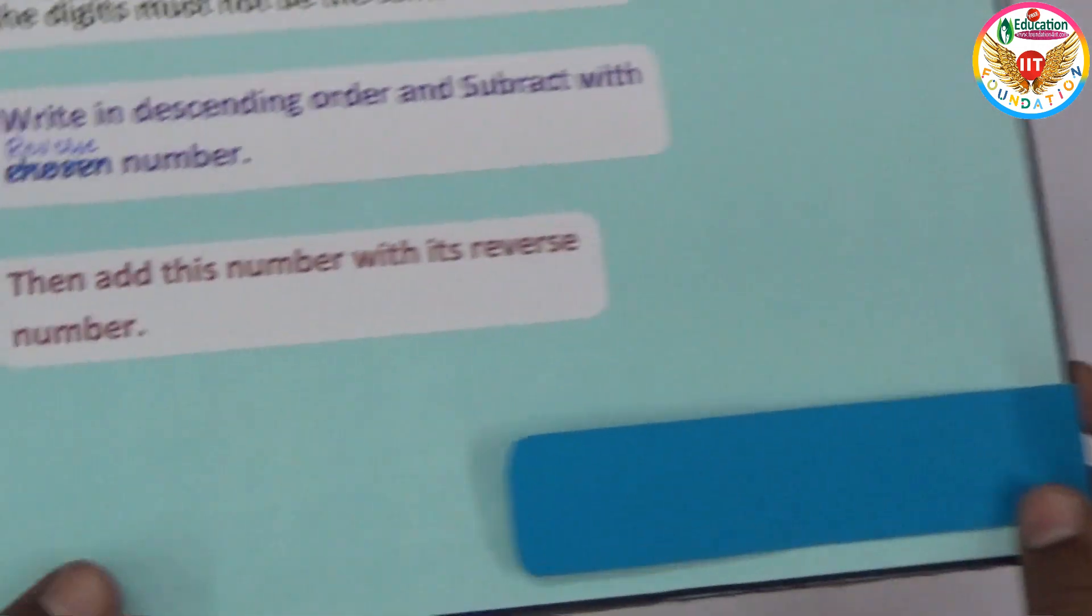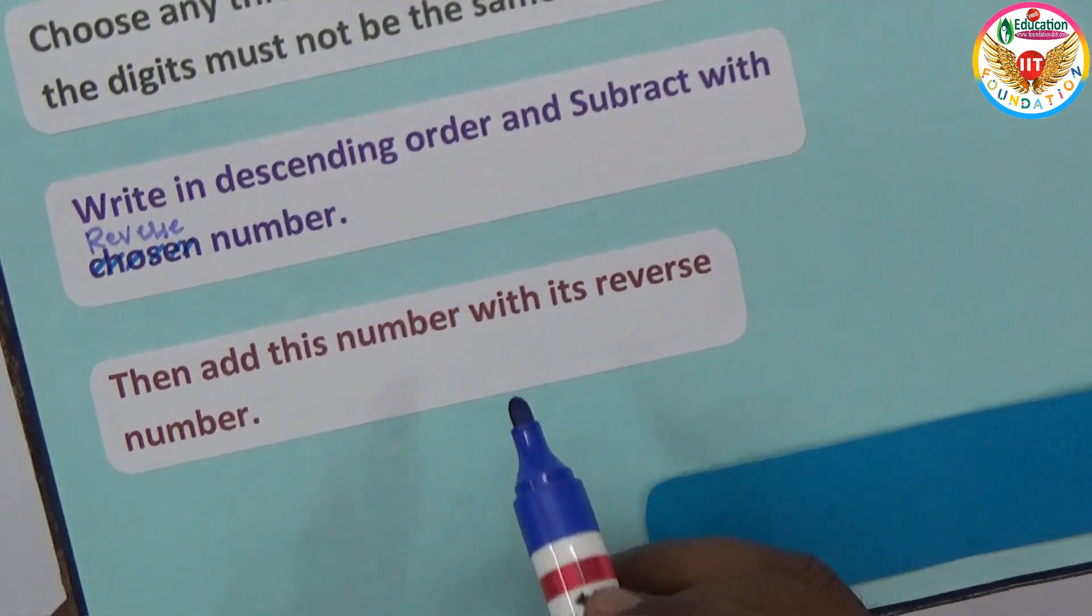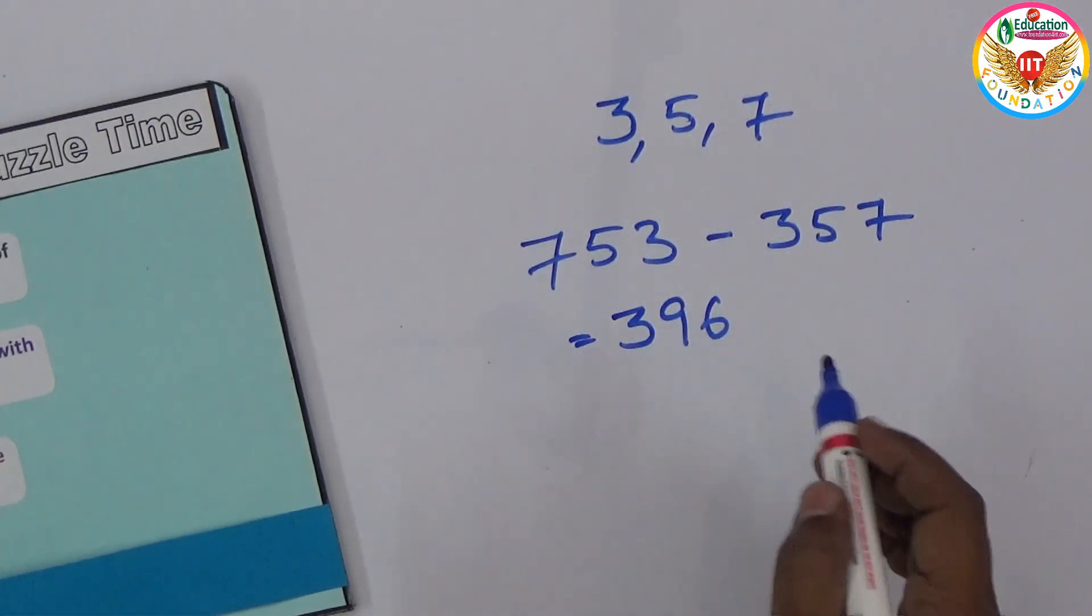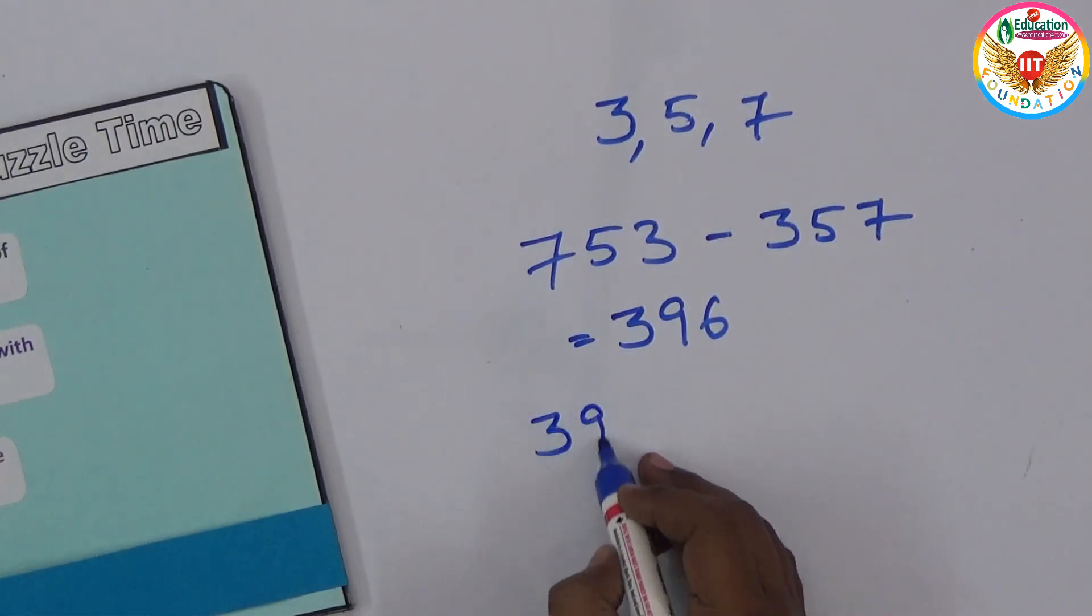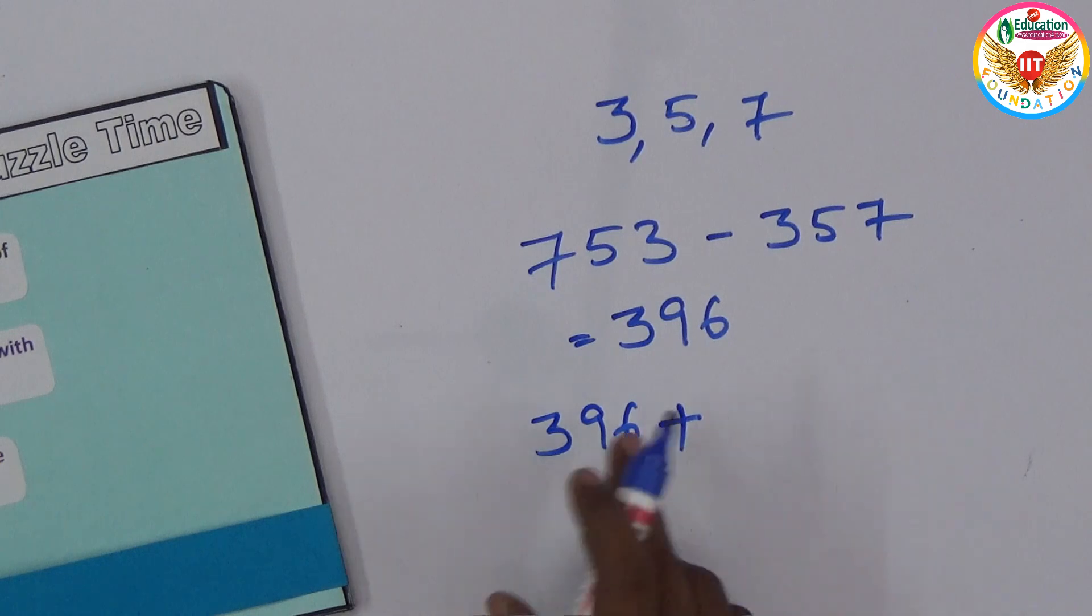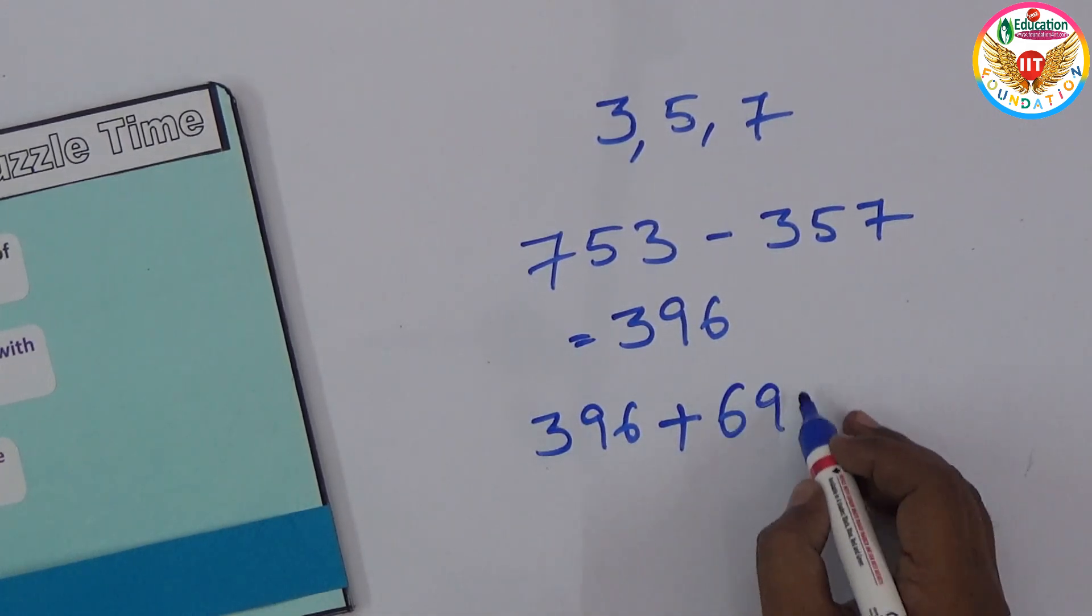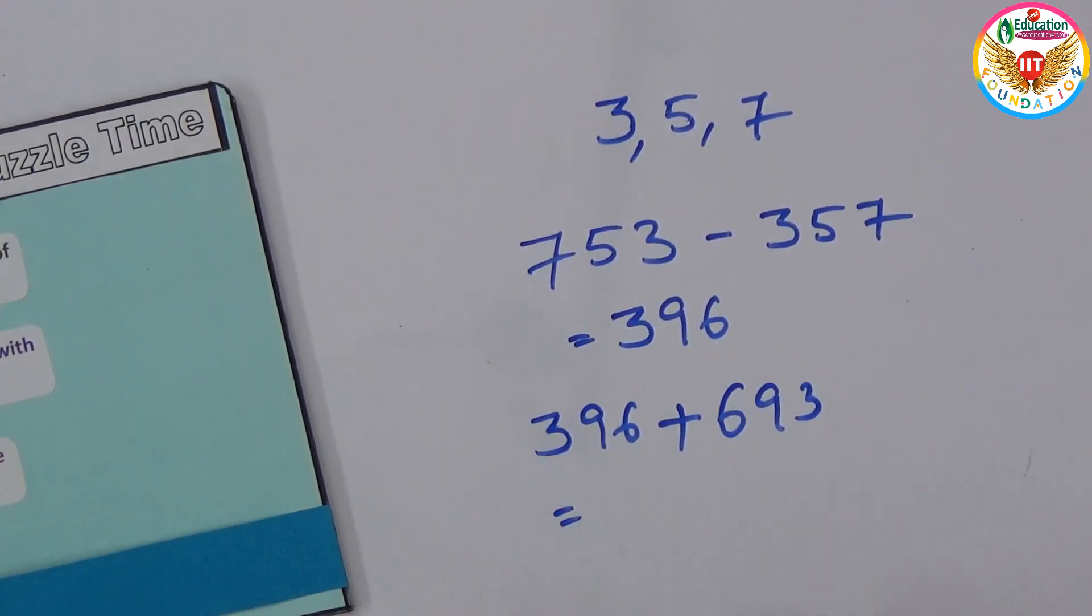Afterwards, add this number with the reverse number. Take this number 396 and add with the reverse of this, which is 693. Just add them, and the sum of both numbers is 1089.